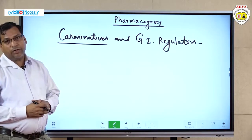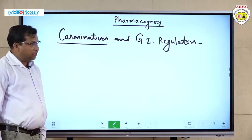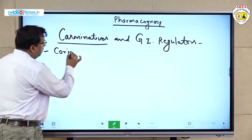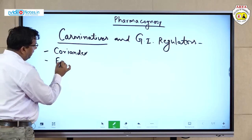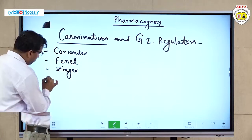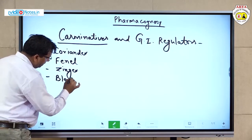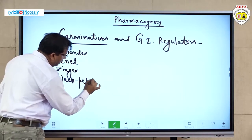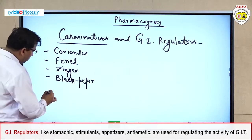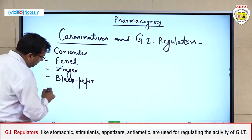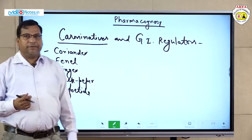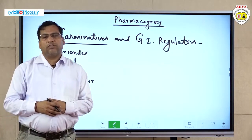These agents also regulate the gastrointestinal functions. In this section we study about coriander (dhaniya), fennel (sauf), ginger (adhrak), black pepper (kali mirch), and asafoetida (hing), also known as Ferula asafoetida.